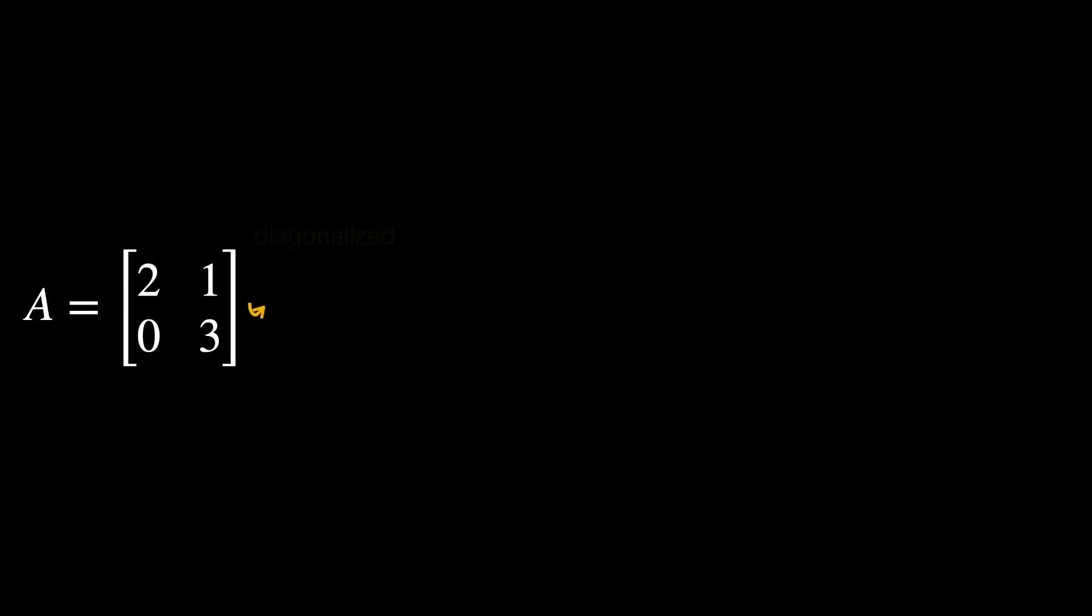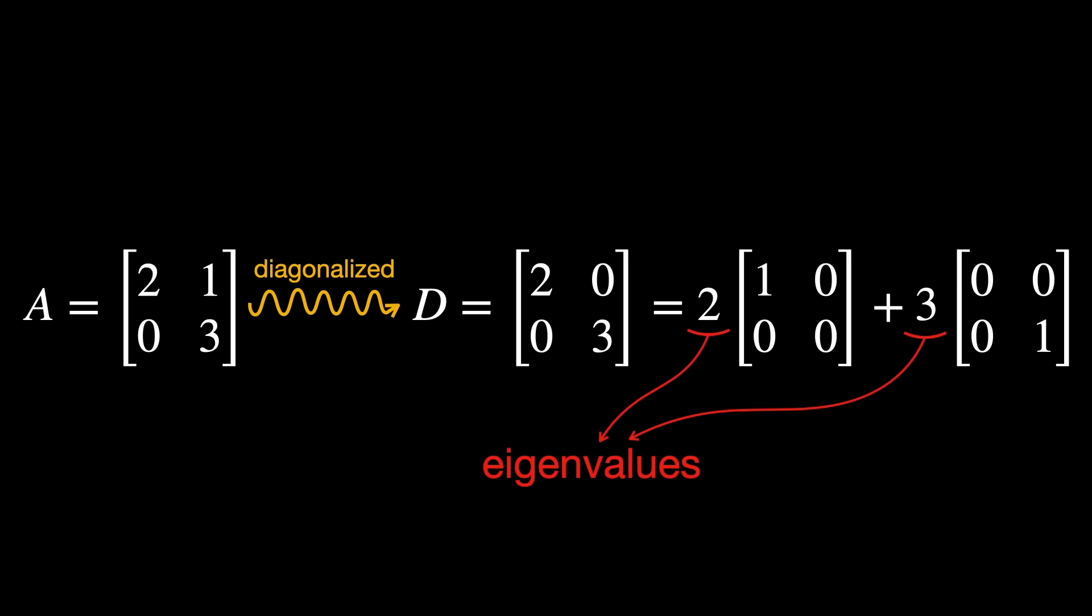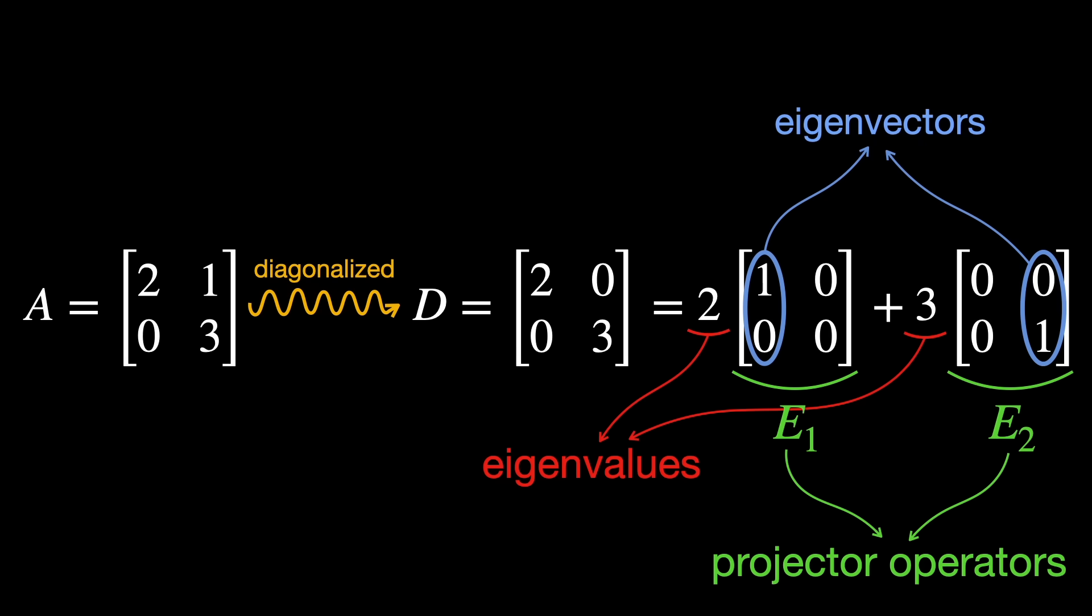In linear algebra, when a matrix is diagonalizable, we can write it as a sum over its eigenvalues and eigenvectors. Like in this case, where the matrix A has this spectral decomposition, with eigenvalues 2 and 3 and projector operators E onto the one-dimensional subspace, or eigenspace, spanned by the eigenvectors v1 and v2.